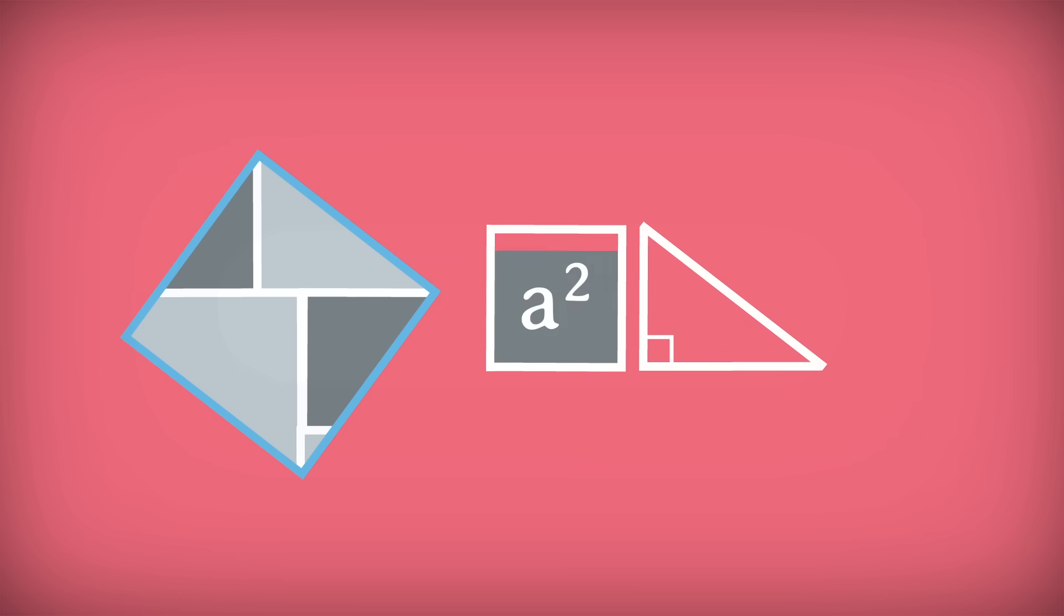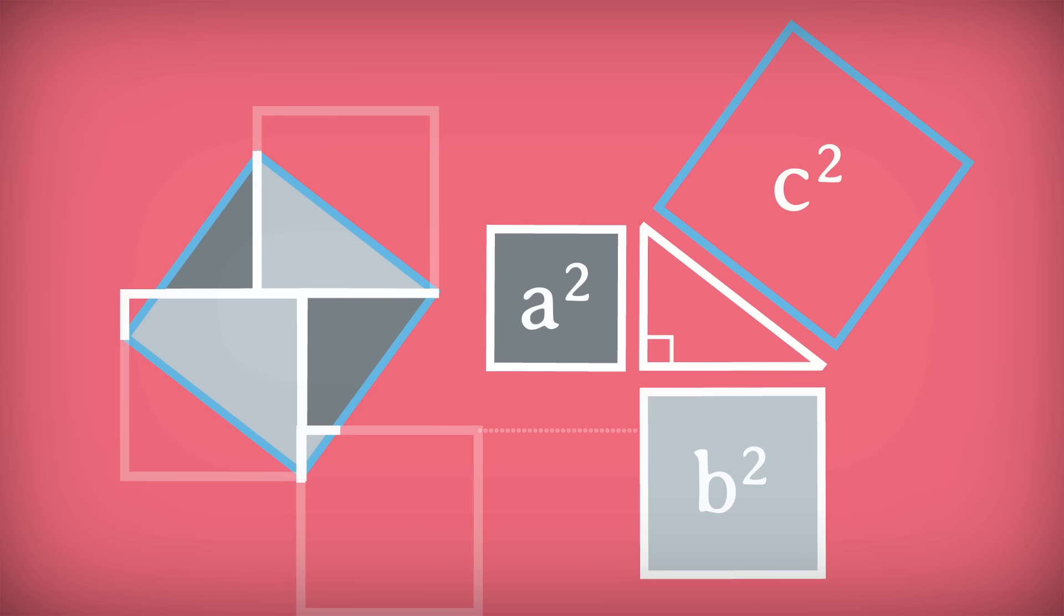Here's the answer. The dark gray square is a squared, and the light gray one is b squared. The one outlined in blue is c squared. Each blue outlined square contains the pieces of exactly one dark and one light gray square, proving the Pythagorean theorem again.